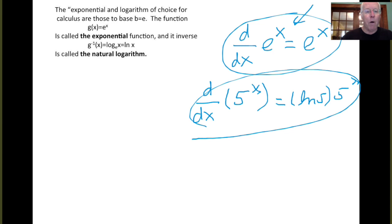So the function e to the x is called the exponential function, and its inverse, we'll call that g inverse of x, is the log to the base e of x, and that is normally written as just ln of x. It's used so much you want a convenient short notation. ln of x, and this is called the natural logarithm of x.